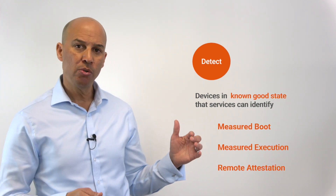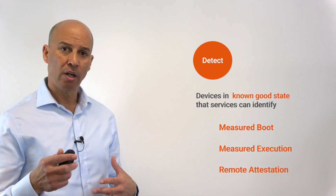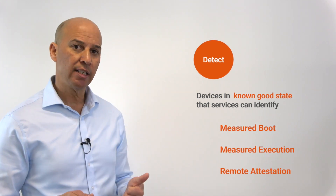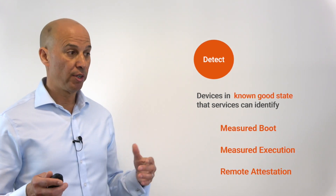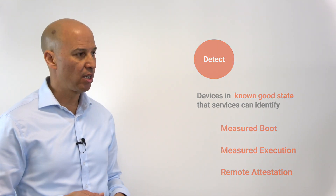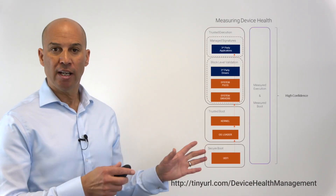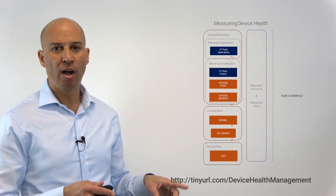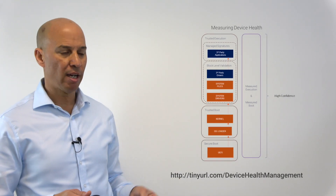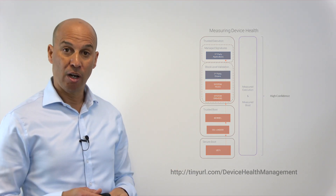Those measurements can be used for remote attestation — an exchange with an online service — so you can expose services and have confidence in both the identity and the integrity of the devices being used, either by you or a collaborating organisation, to access those services. We've done another video if you want to check out the detail behind measured execution and how we use those early system measurements extended right up through the applications — please check out that separate YouTube video which goes into a lot more detail.